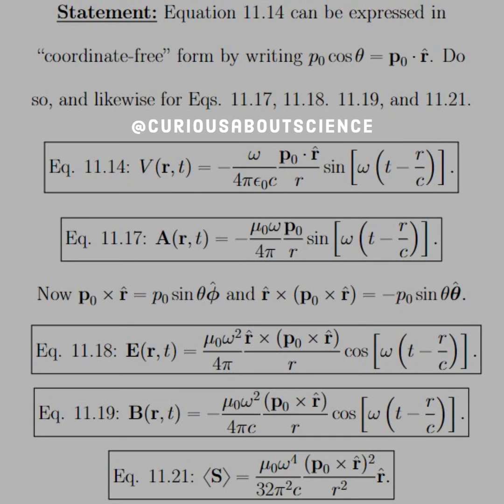we see we get a triple product for E, just a single cross product in the B-field. And then we see that we get a square cross product in the Poynting vector.